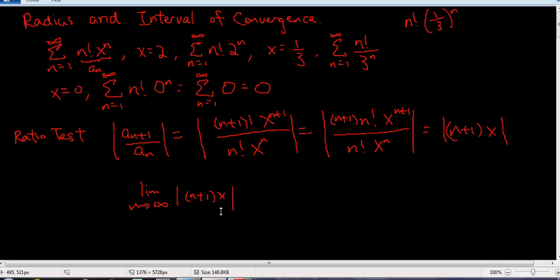Right, so what does this equal to as n gets really big? Well, you might say it depends on x. And that's true. But if x is, say, 5, it's going to go to infinity. If x is negative 3 billion, it's going to go to infinity. In fact, this is always equal to infinity, provided x is not 0. So for x not 0. So we know as long as x is not 0, this series is going to diverge.